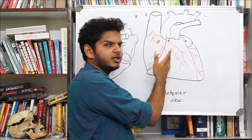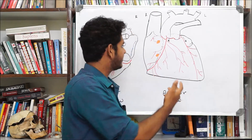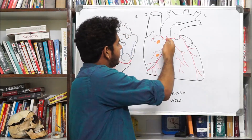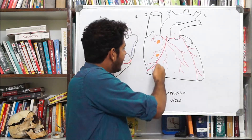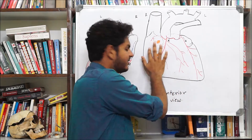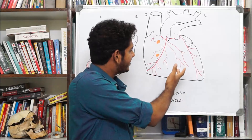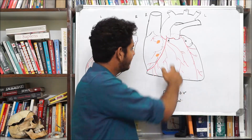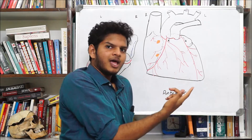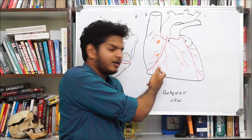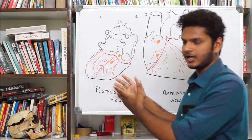The right coronary artery descends in the right atrioventricular sulcus — the partition between the right atrium and right ventricle — giving numerous branches supplying the right atrium and right ventricle. These include right atrial branches and right ventricular branches, as well as the nodal branch to the SA node.